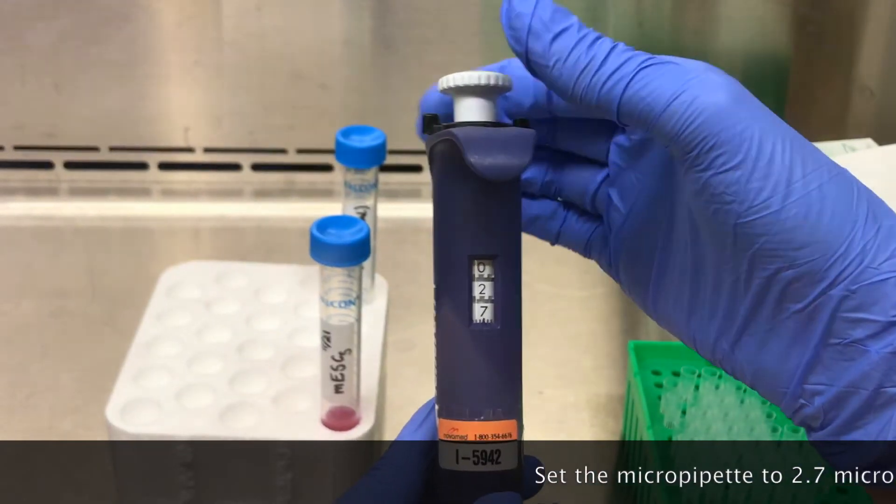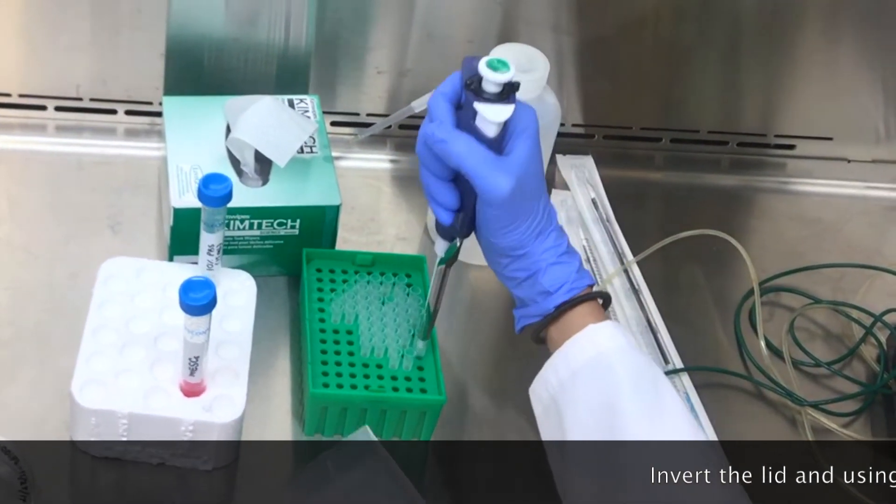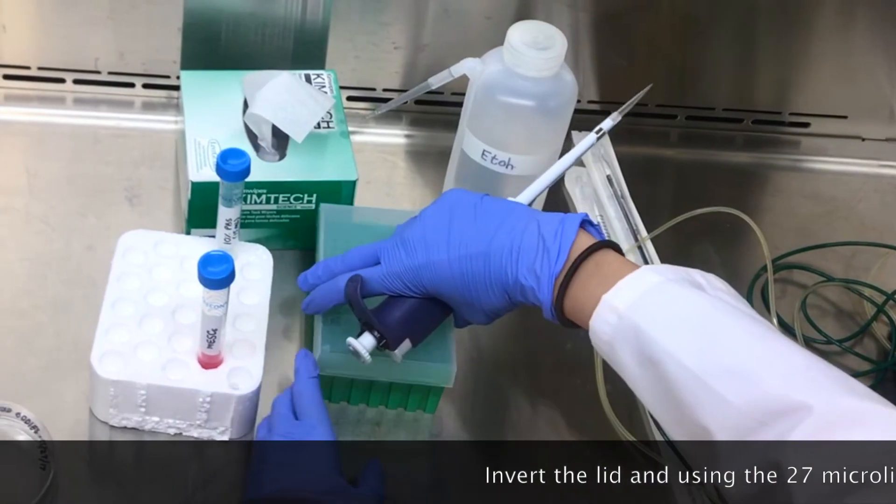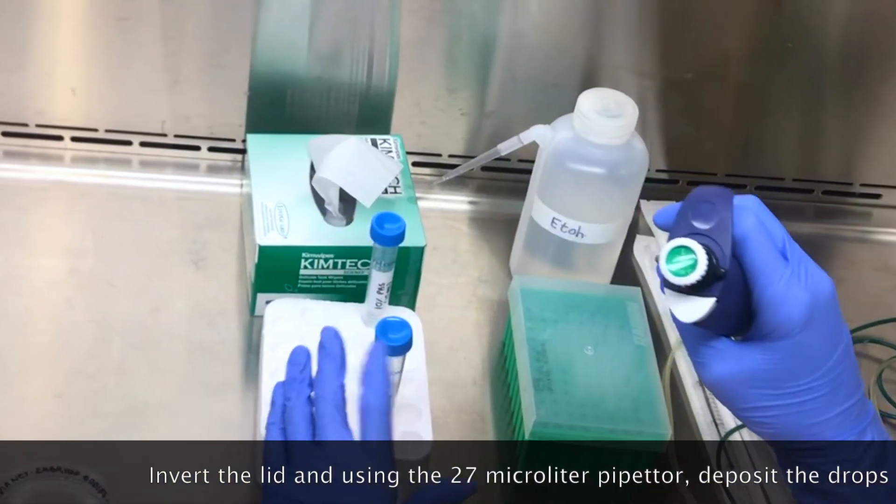Set the micro pipette to 2.7 microliters. Then using the sterile pipette, plate 2.7 microliter drops in the lid of the petri dish as shown in the video.